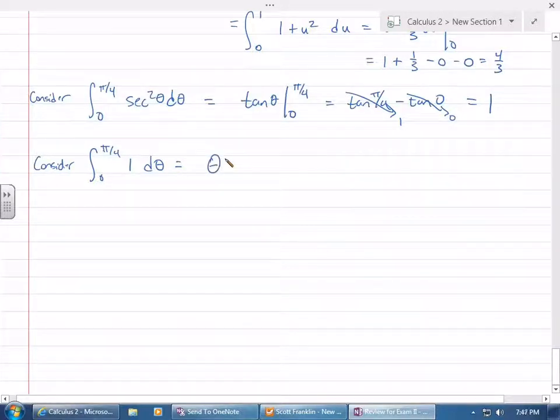Now there's a theta plus c, right, but not when you have limits. Not when you're doing definite integrals. You just do from 0 to pi over 4. So that's pi over 4 minus 0, which is just pi over 4.